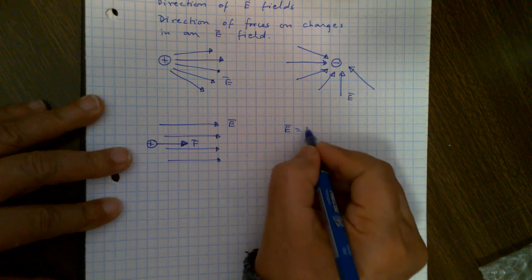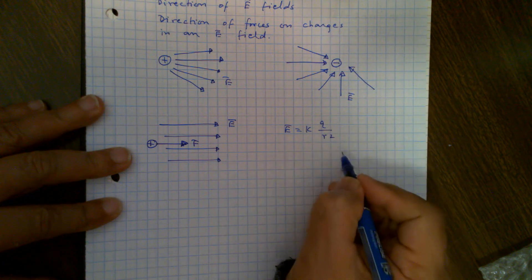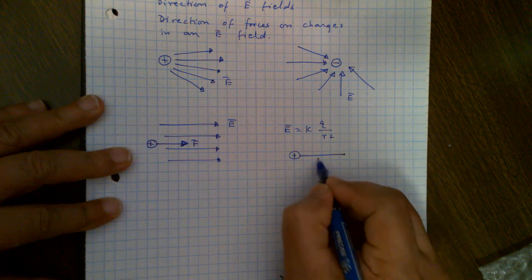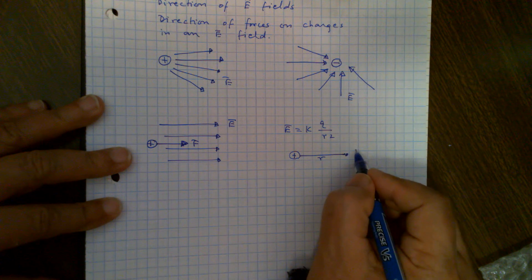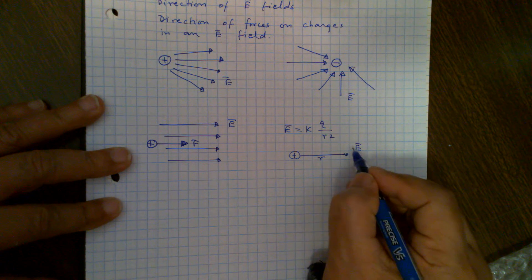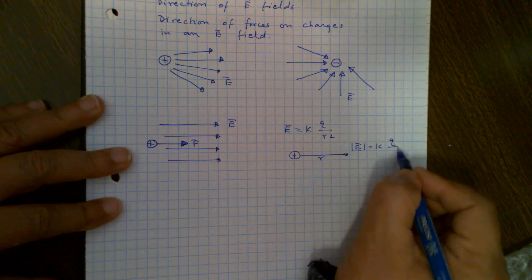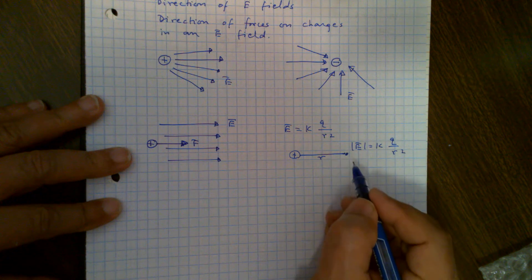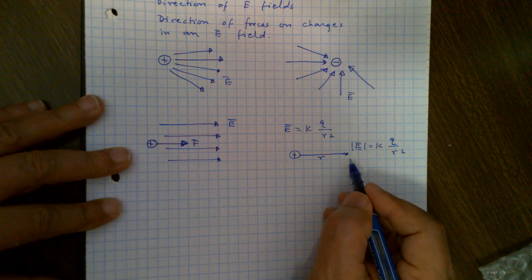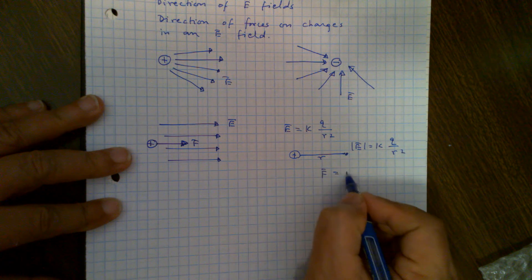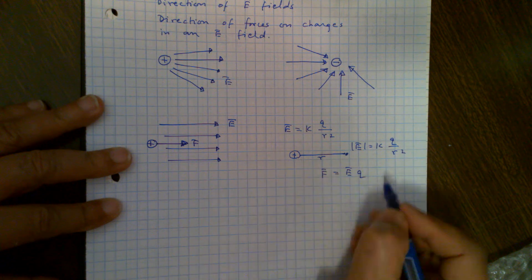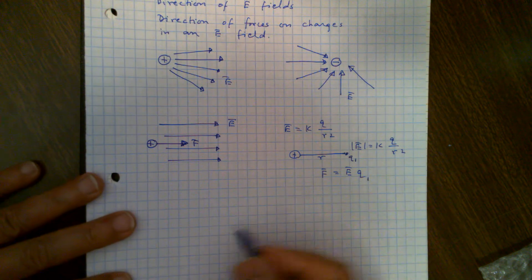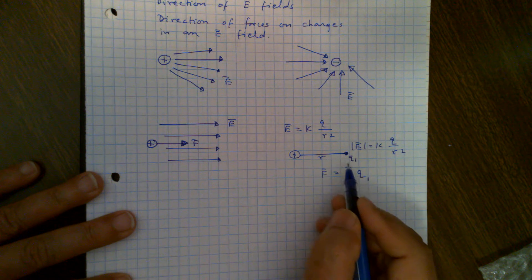Electric field E is kq over r squared. When you have a positive charge and a point r away from the charge, the electric field magnitude at this point is given by kq over r squared. So if you have a charge here, the force on that test charge will be F equals E times q. If the test charge is q1, that will be E times q1. All you have to do is find the electric field at this point and multiply by the charge q1.